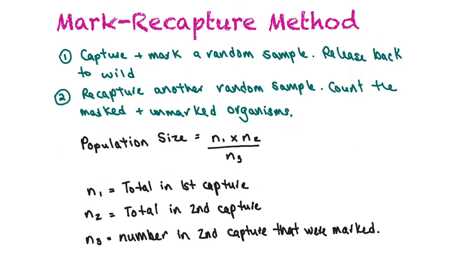So the mark-recapture method is ideal for organisms that move around a lot. So you can't just harness them all in. The first thing that you would do is you would capture and mark a random sample and mark them in a way that's not going to make them stand out to predators or be unable to find a mate. It would be a discrete marking. It could be a radio collar or a tag on a leg of a bird.